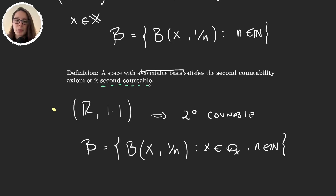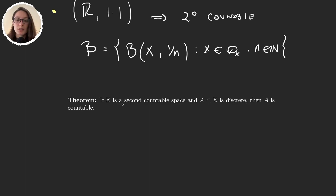Second countability is a very important property and it will be essential when we prove Urysohn's metrization theorem, which gives us the conditions a topological space must satisfy to guarantee that the space is metrizable. Urysohn's metrization theorem is one of the most important theorems in topology, so it's important for us to understand second countability very well. Let's go ahead and see one of the properties that second countability gives us.